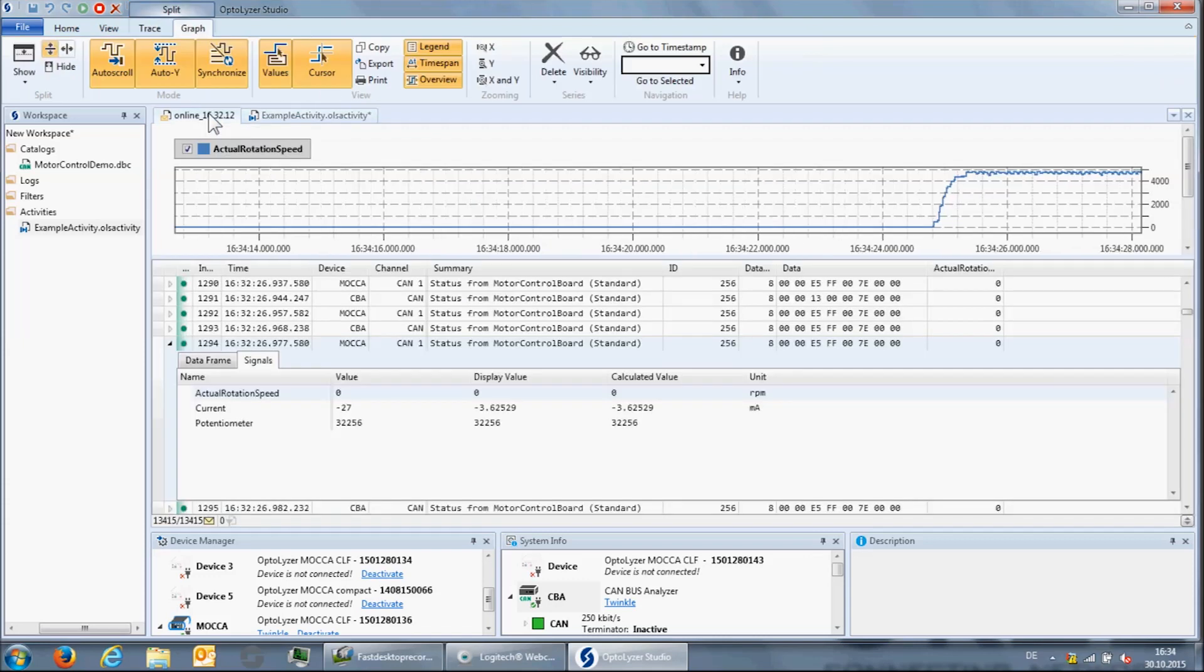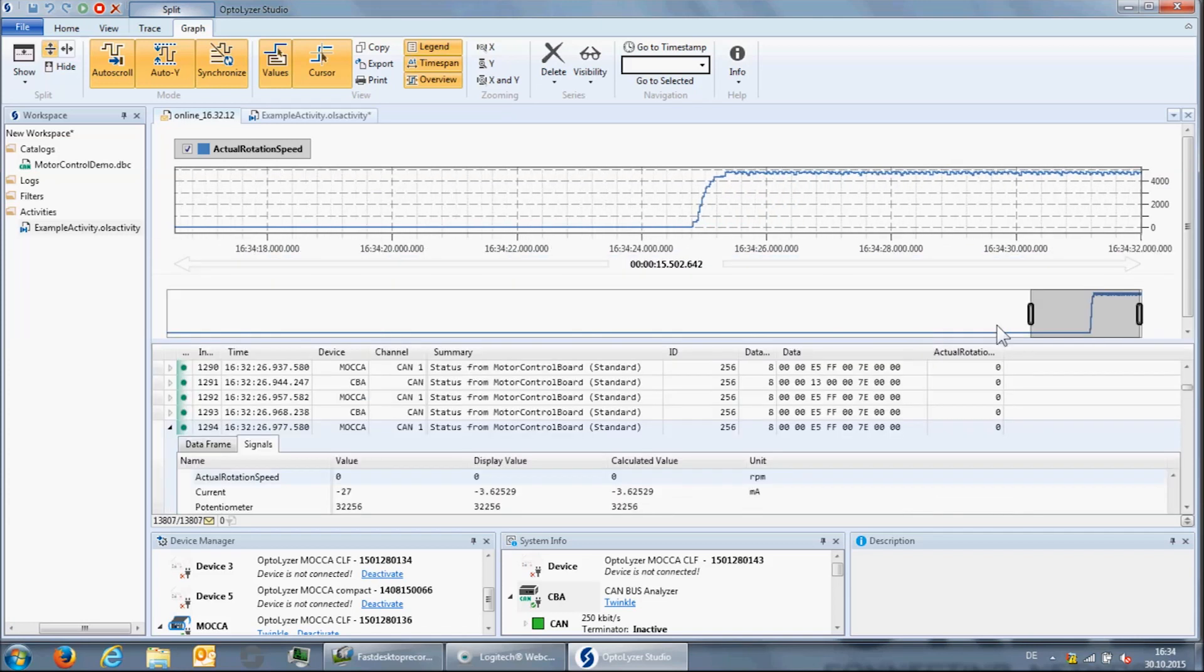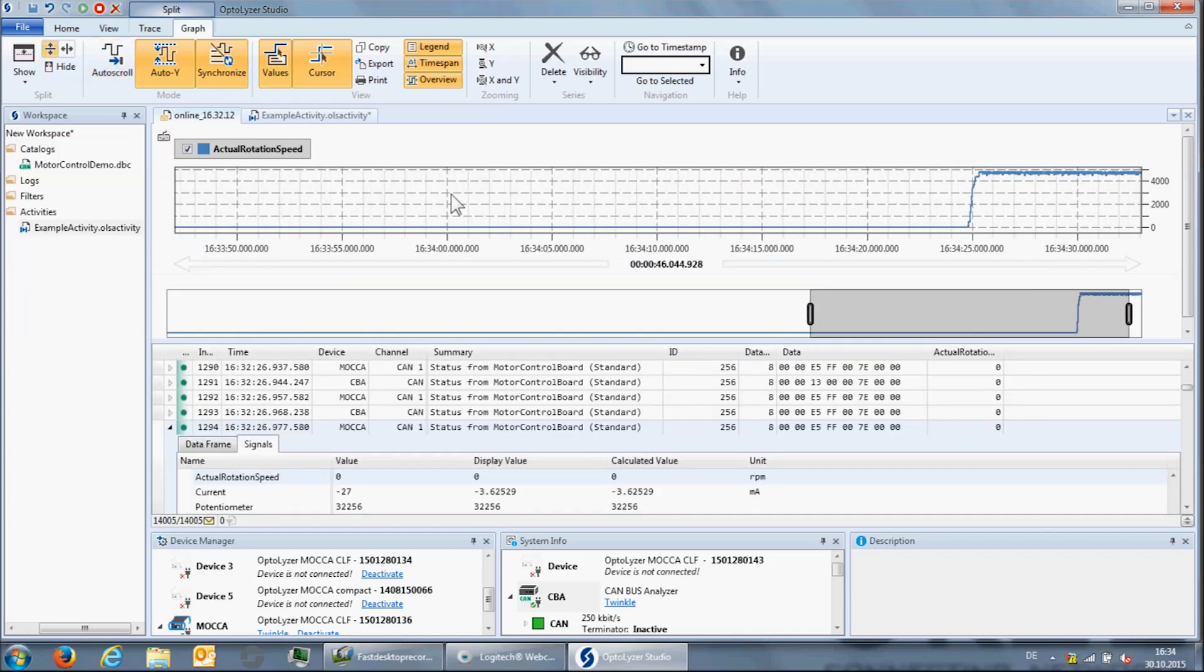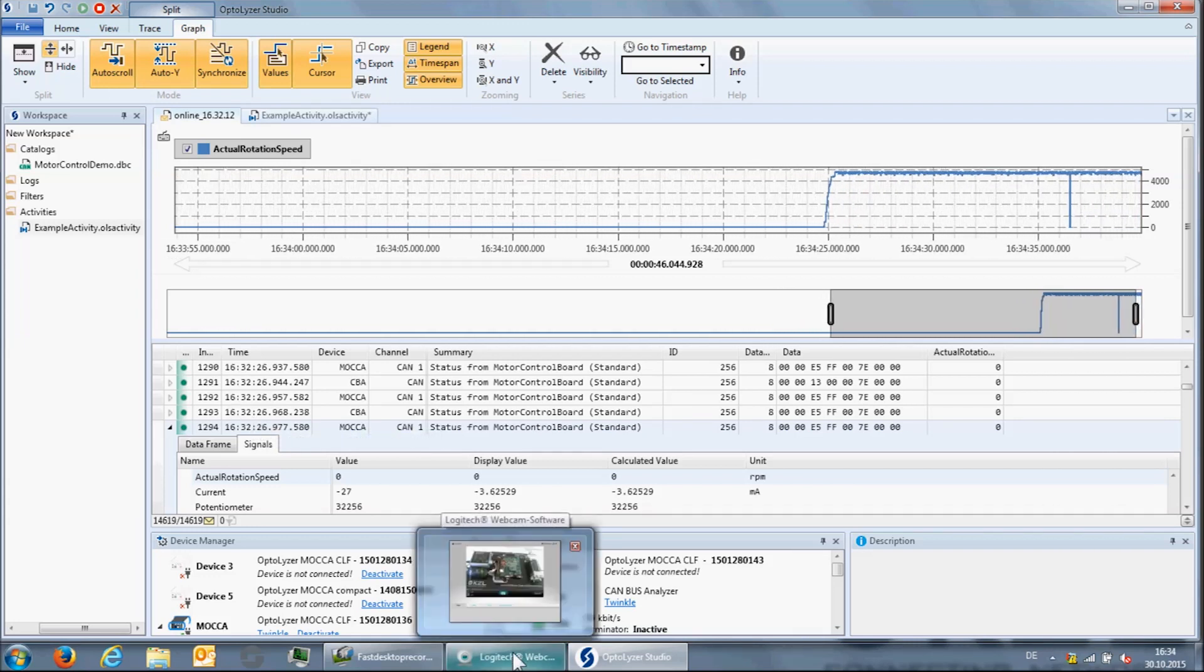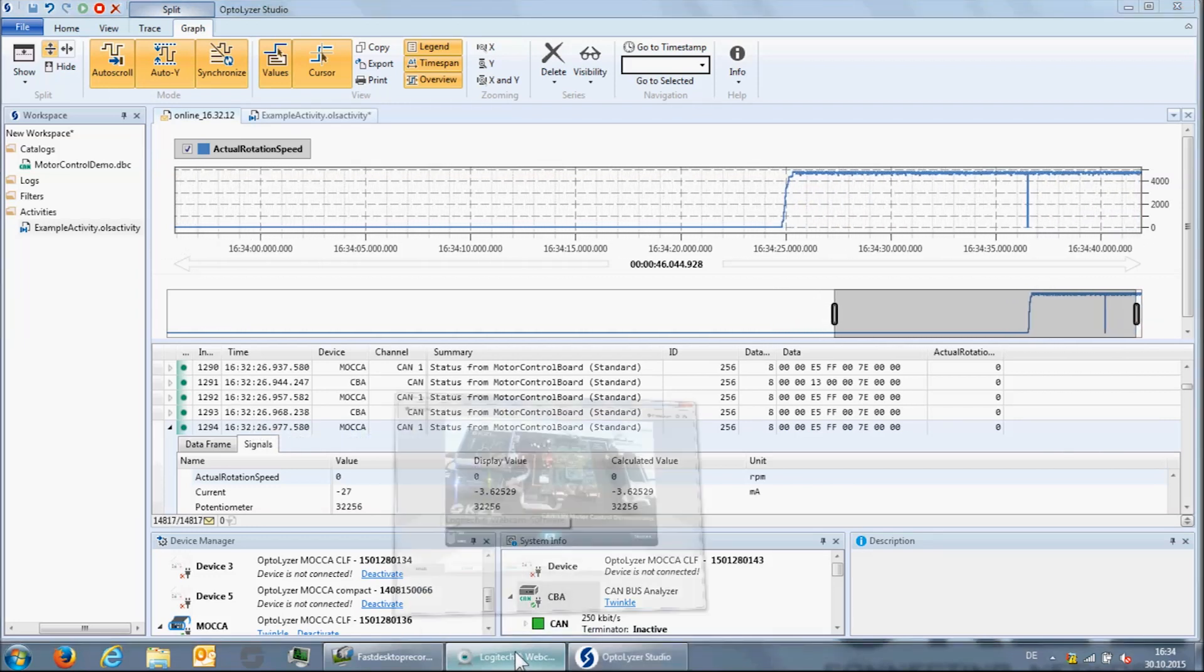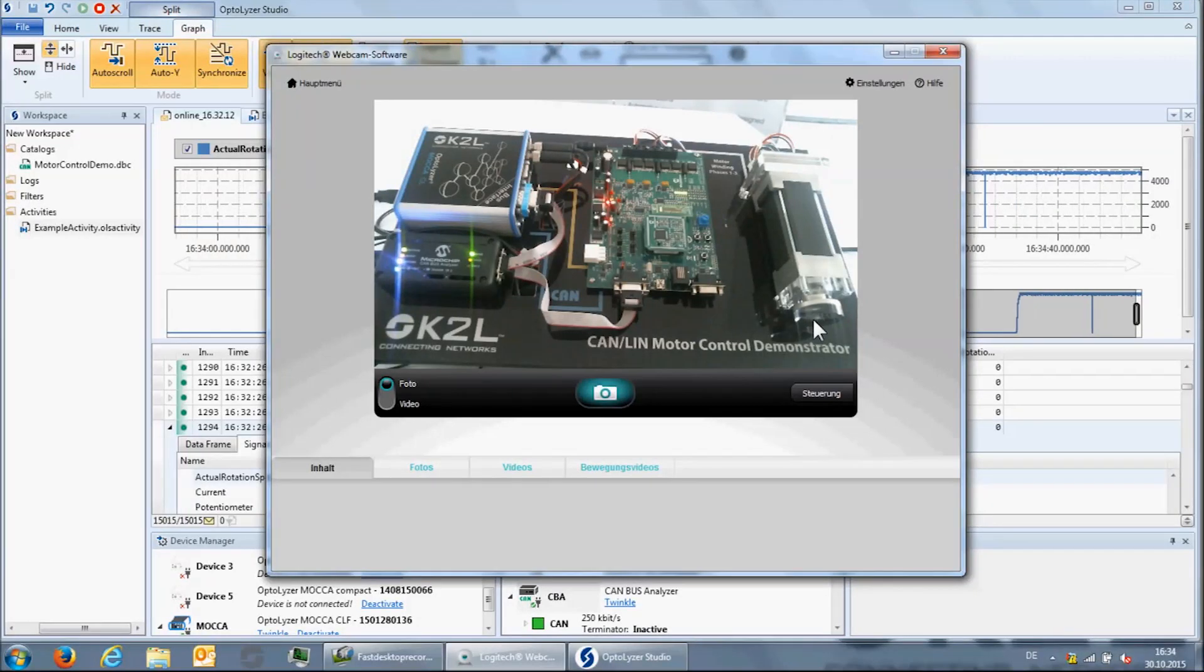When we go back to the trace and the graph view, we can now see that the rotation speed that is reported by the motor control board has changed to 5000 revolutions per minute. So the motor should actually be running. Again, we can confirm this by going back to the camera.